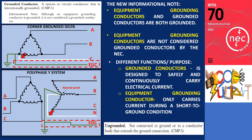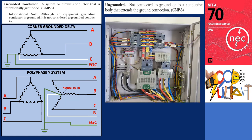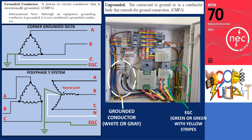In Article 100, an ungrounded conductor is defined as not connected to the ground or to a conductive body that extends the ground connection. Therefore, in the delta corner ground system, phases A and B are the ungrounded conductors. In the polyphase Y system, phases A, B, and C are considered ungrounded conductors. It is important to note that the neutral conductor is not always a grounded conductor unless the neutral point is grounded. In a typical panel board installation, specific color coding is required: the equipment grounding conductor must be green or green with yellow stripes, the grounded conductor should be white or gray, and the ungrounded conductor should be distinguished by colors other than white, natural gray, or green — alternatively, a combination of color plus distinguishing marking can be used.